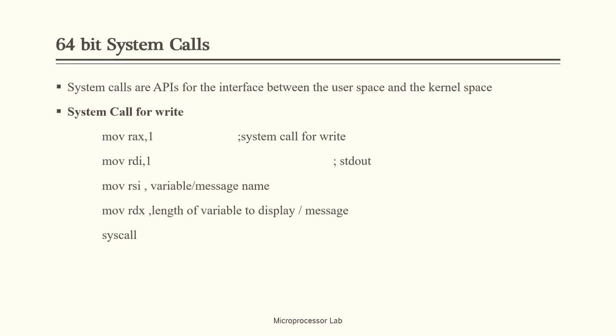Let us see which are the different system calls used to write our program. The first system call is for write, to display a message. The parameters passed to this system call are: RAX equal to 1, which is the identity for the write syscall; RDI equal to 1, which indicates the standard output device; RSI should hold the variable or message name we want to display; and RDX holds the length of that variable. RAX is the 64-bit accumulator register, RDI is the 64-bit destination index register, RSI is the source index register, and RDX is the data register.